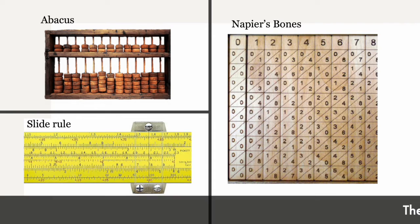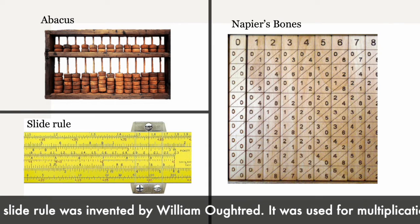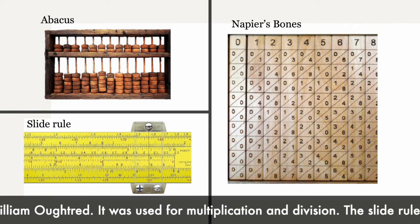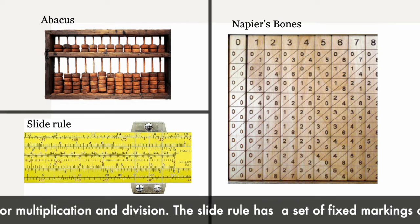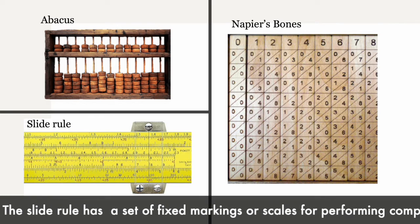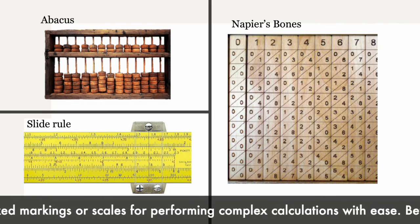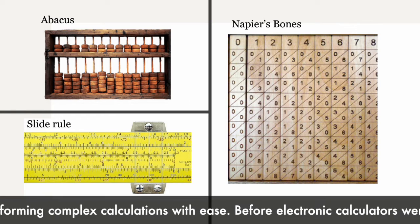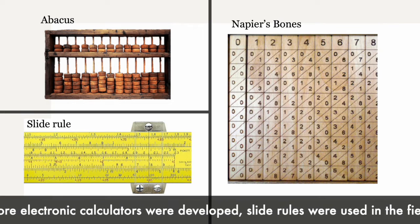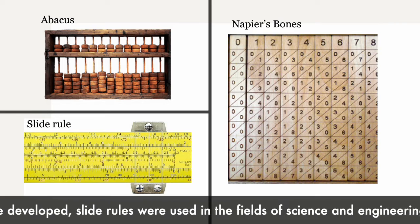The slide rule was invented by William Ortrid. It was used for multiplication and division. The slide rule has a set of fixed markings or scales for performing complex calculations with ease. Before electronic calculators were developed, slide rules were used in the fields of science and engineering.